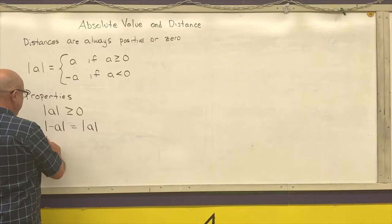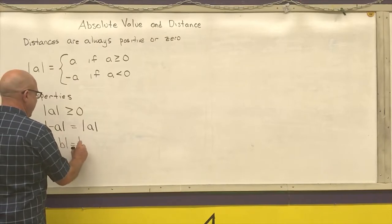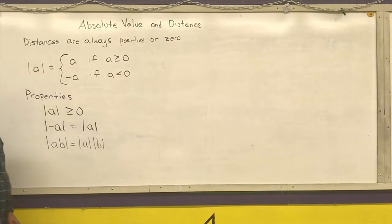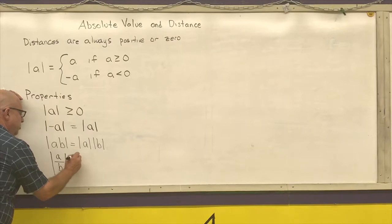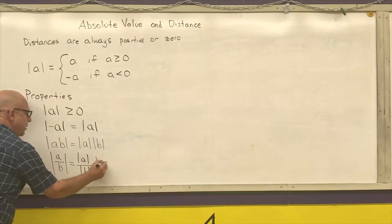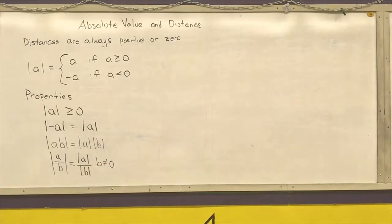The absolute value of a product is equal to the product of the absolute values. And the last property is that the absolute value of a quotient is equal to the quotient of the absolute values as long as the denominator is not equal to zero.